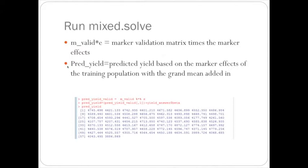Once we have the marker effects, we need to multiply it back to the markers in the validation population. So to do that.